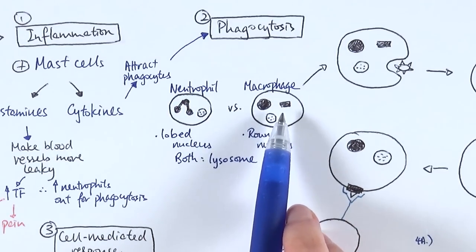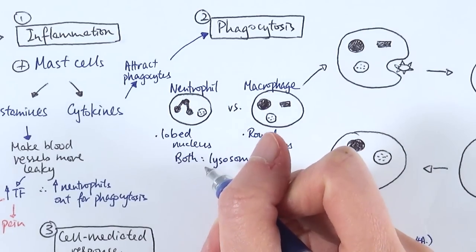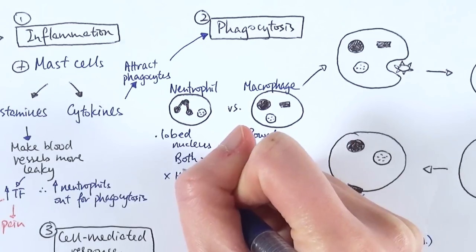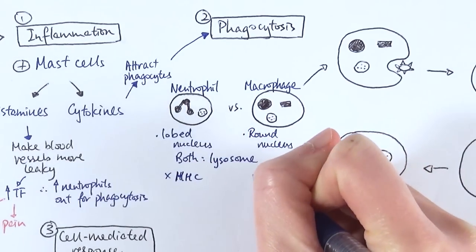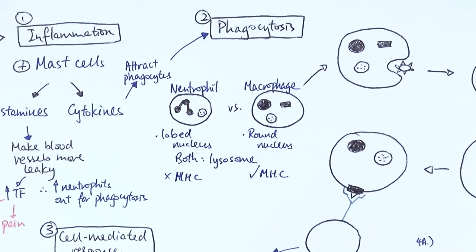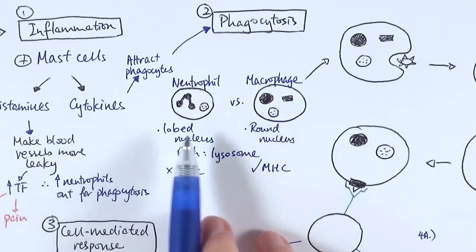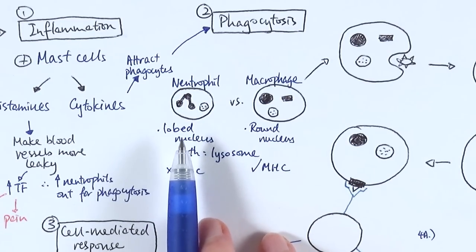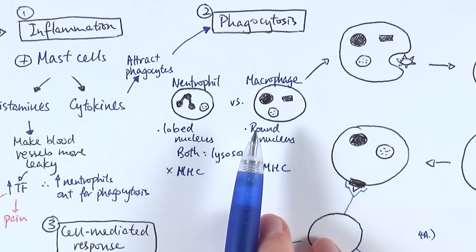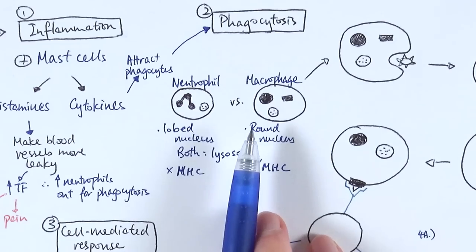The other thing that macrophages have but neutrophils don't is the MHC — the major histocompatibility complex. This protein can turn the macrophage into an antigen-presenting cell to alert the rest of the body about the pathogen invasion. Neutrophils literally just do phagocytosis — they engulf, digest the pathogen and that's it, in about 10 minutes. Macrophages take a little longer because they also keep the antigen and present it.